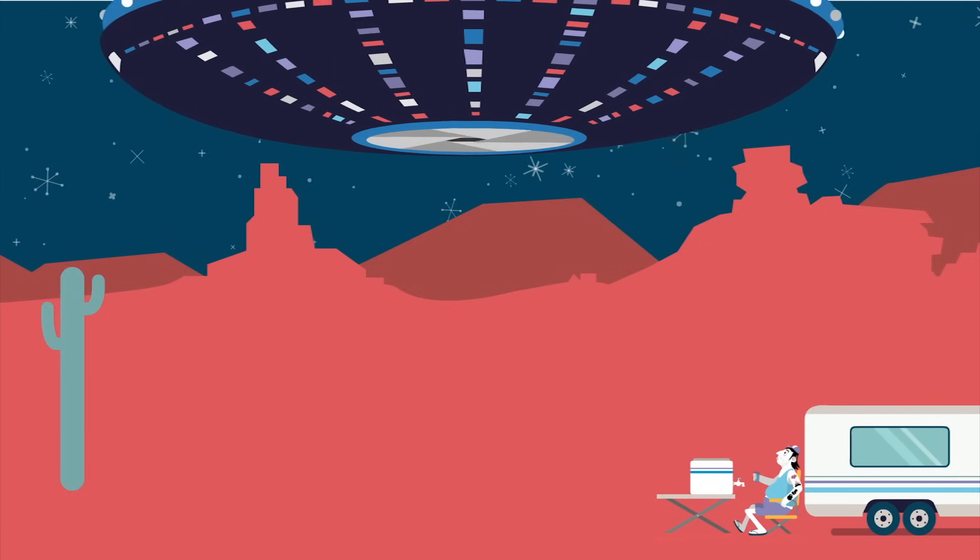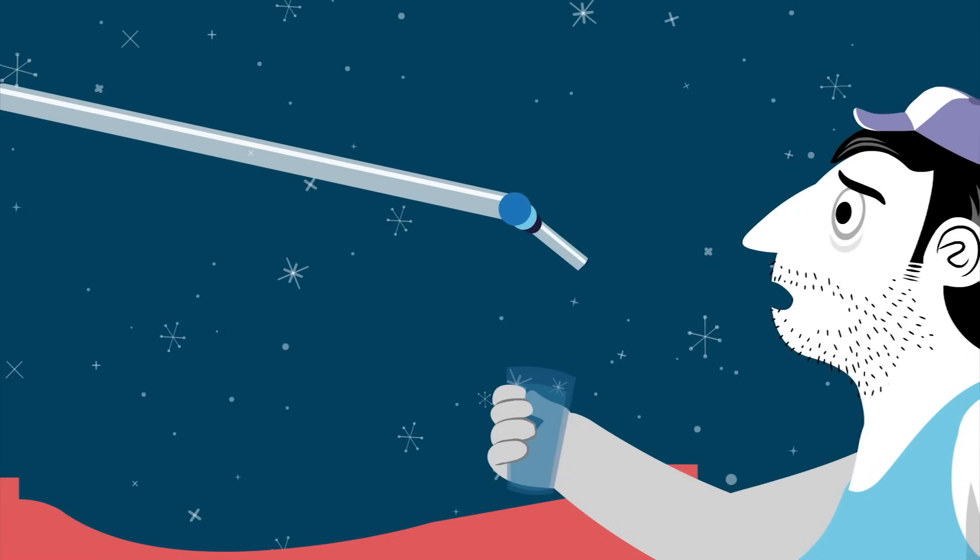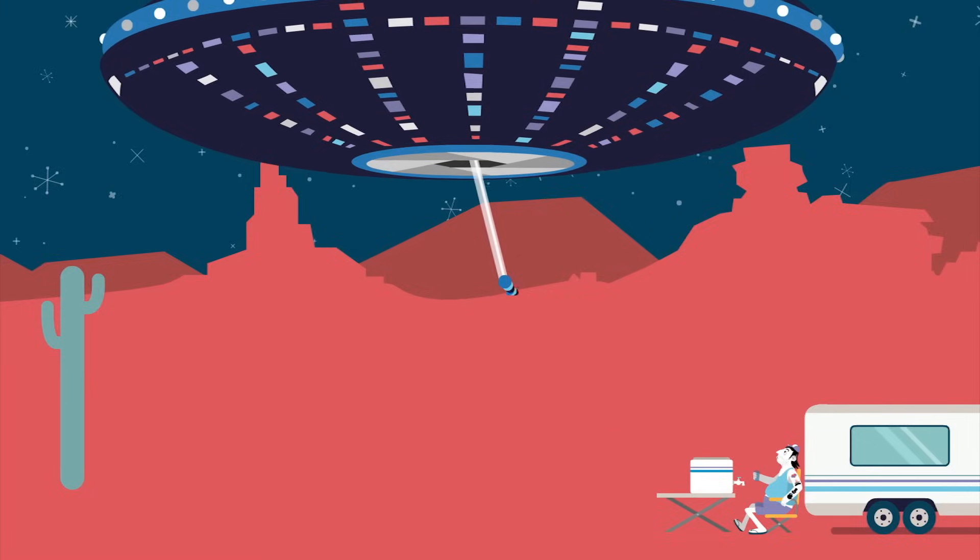But in the rest of the solar system, liquid water is almost impossible to find. So how did our planet end up with so much of this substance, and where did it come from?